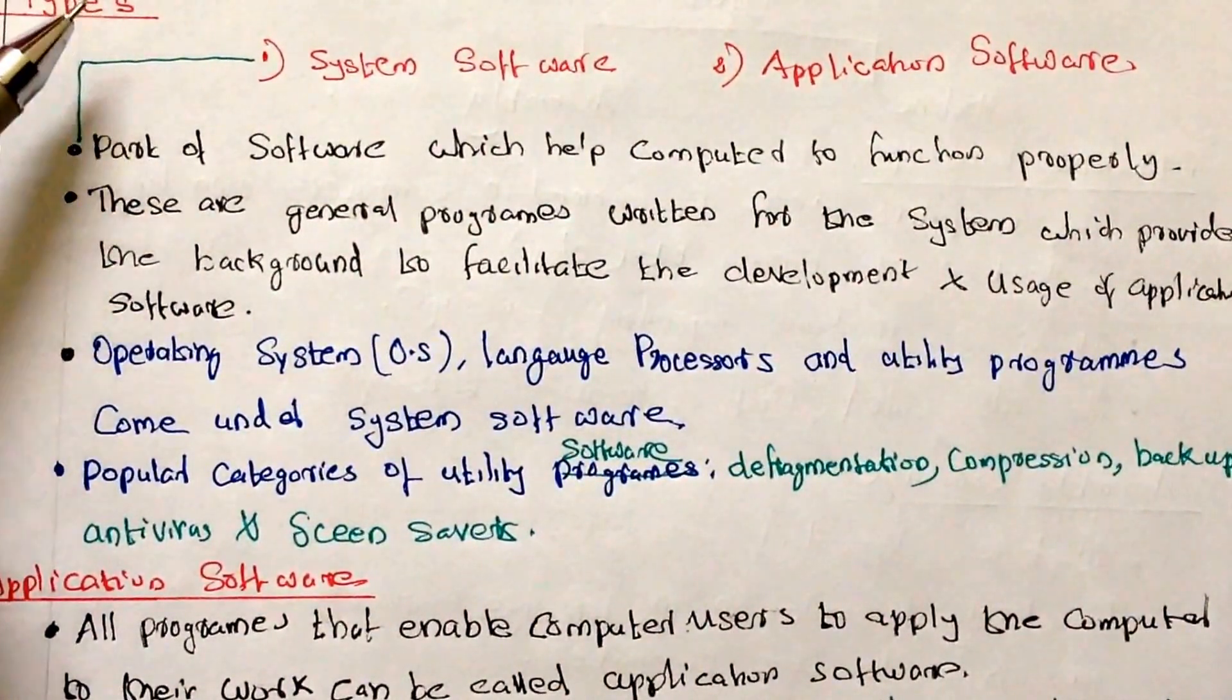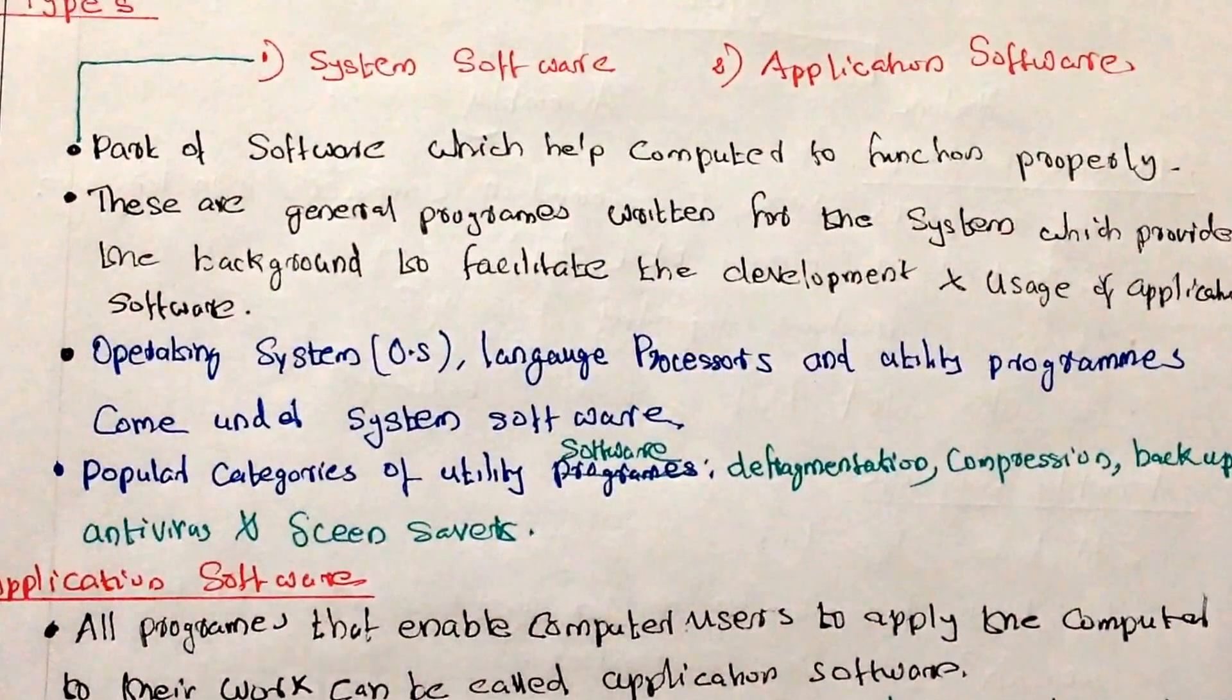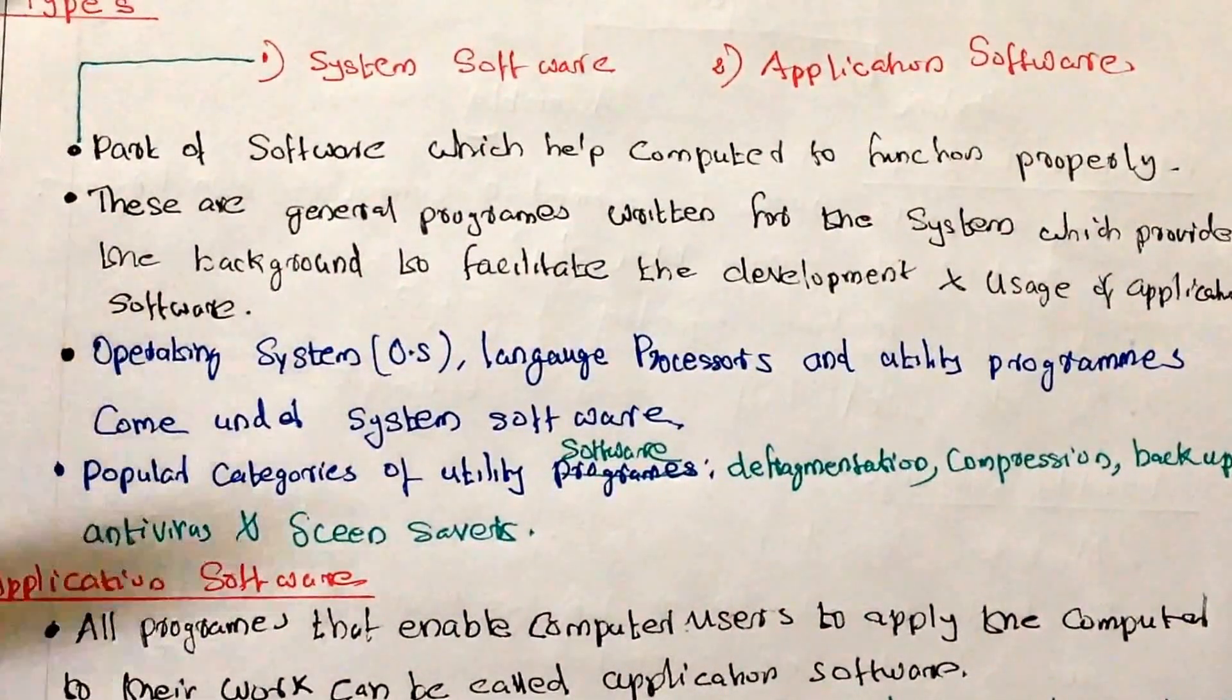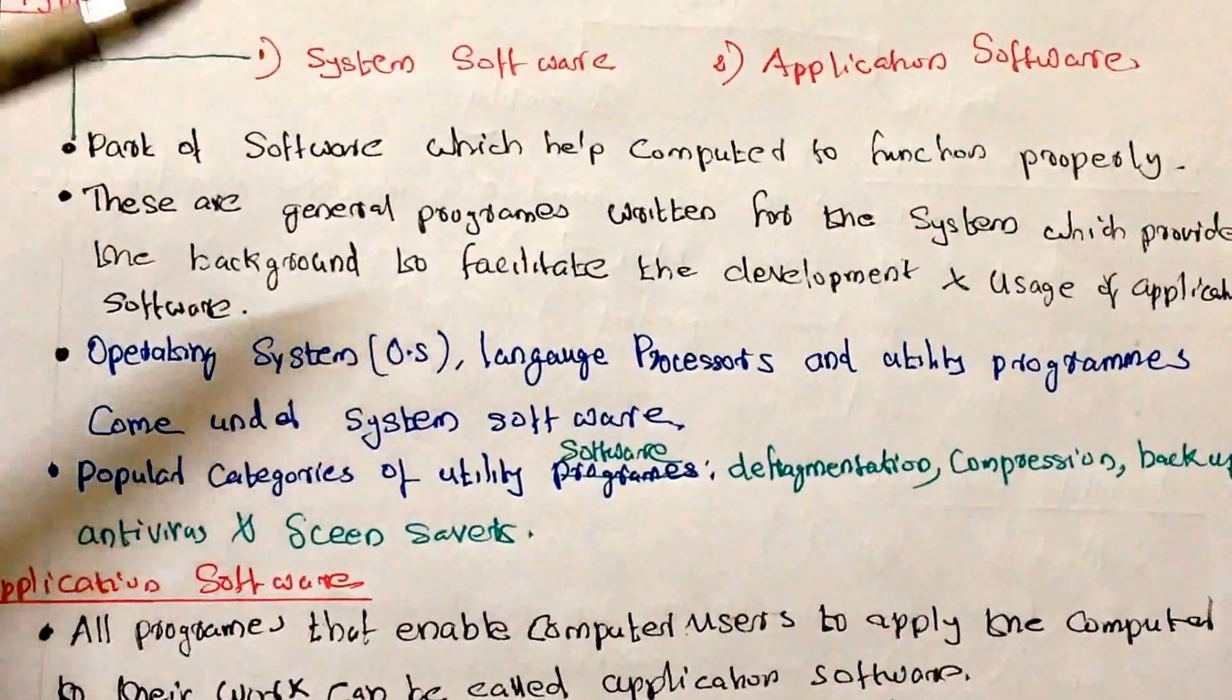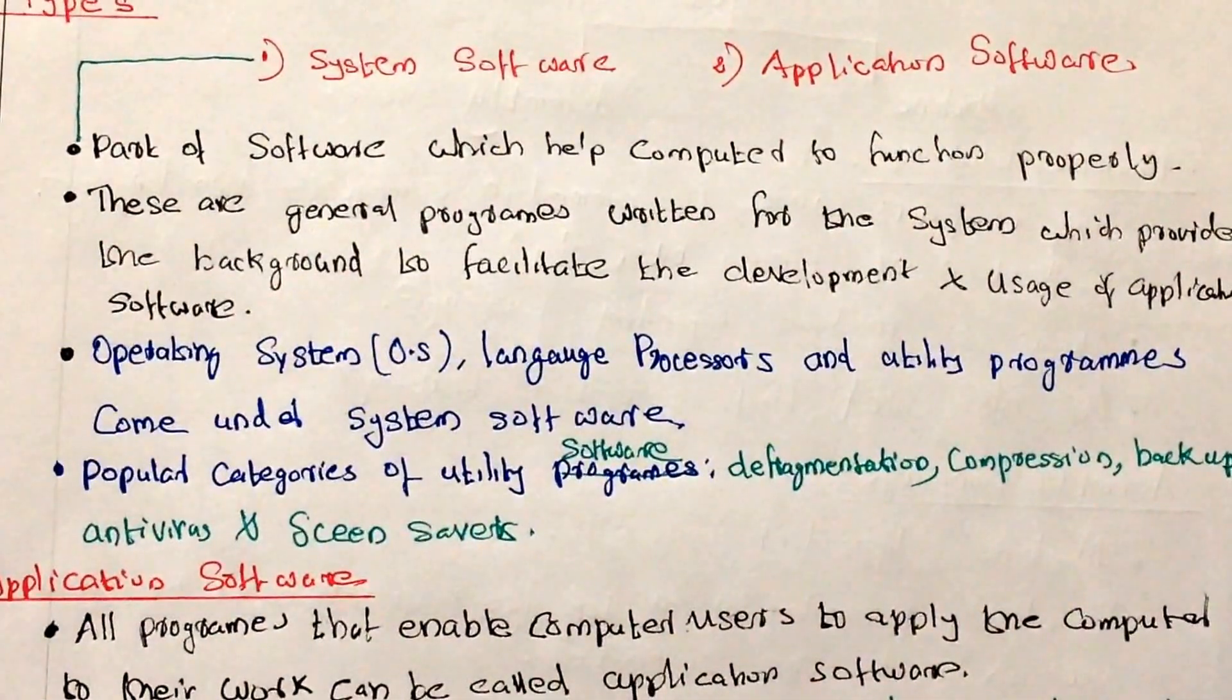In the previous video we discussed what is a software. So I will just give an introduction of software again. It is a group of programs that are put into a computer to operate and control the activities of the computer. It is a set of programs which help the computer to function properly.